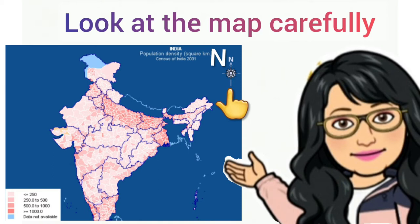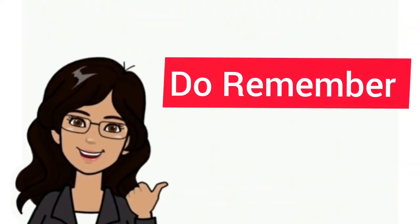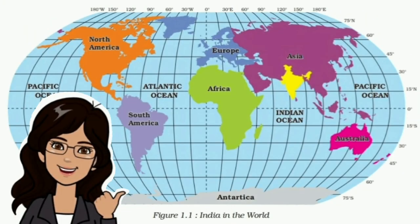When you know the north, you can easily find out the other three directions that are east, west, and south. Do remember, if the north is not shown on a map, the top of the map is taken as the north and the bottom as the south.